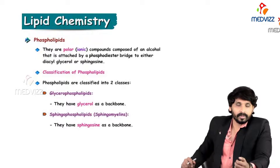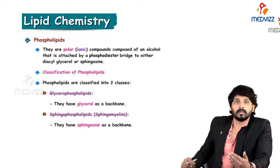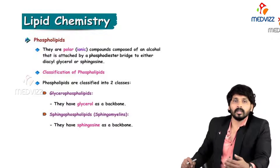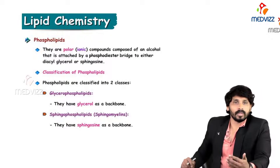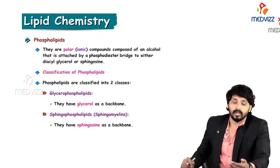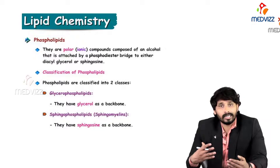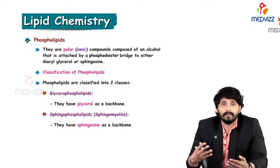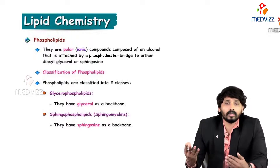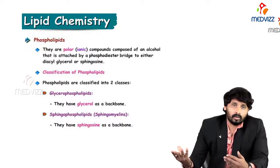In continuation with the previous video, coming to the next lipid, that is phospholipid. Phospholipids are the category of lipids which comes under complex lipids. A phospholipid is a combination of alcohol, fatty acid and phosphate group, which is attached to other substances like nitrogen and other alcohols.